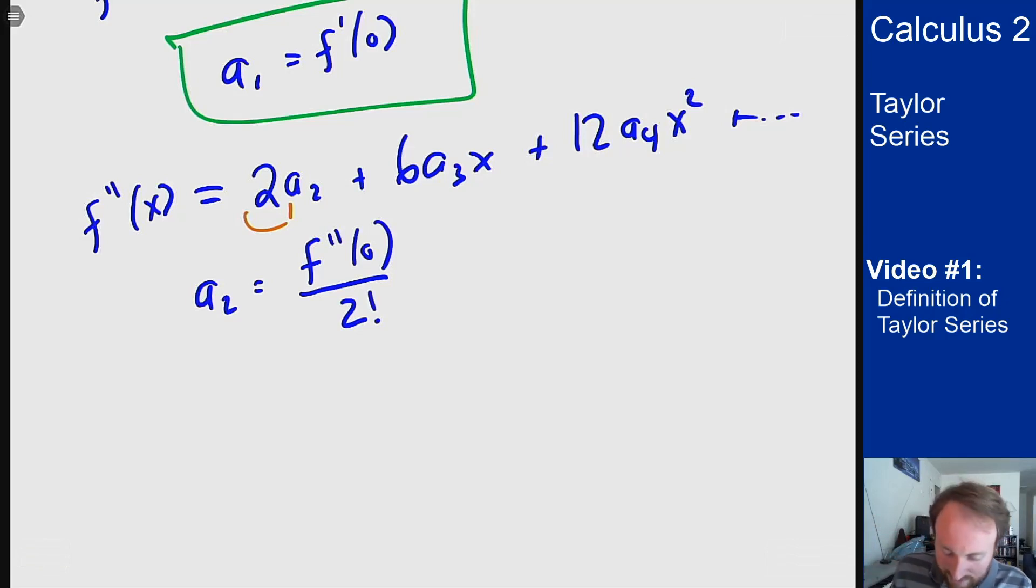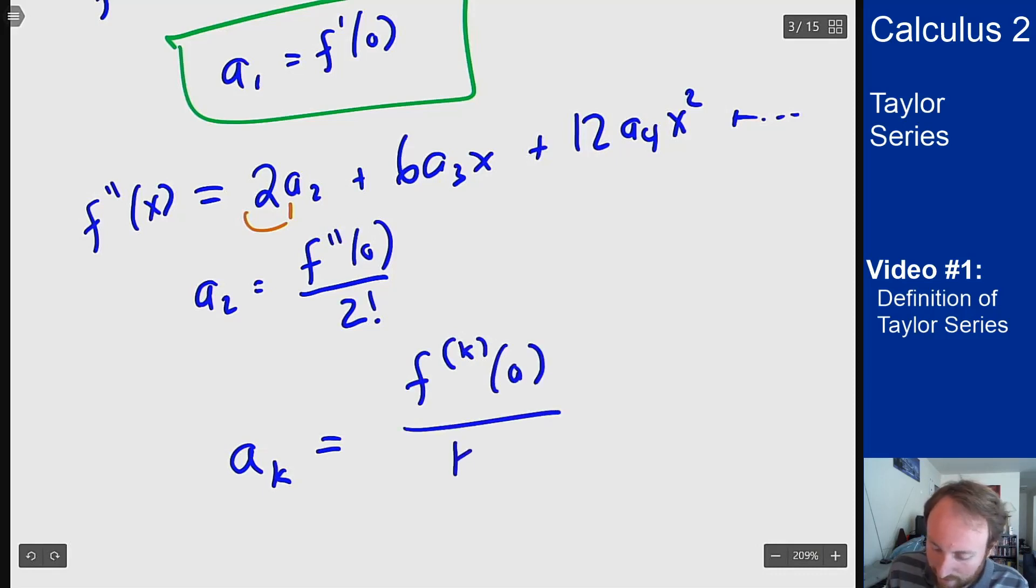If I continue with this process I will see that I get that a_k, the kth term in the series, should be the kth derivative at zero divided by k factorial. All right if I go one more step I will get that a_3 should be f triple prime at zero over 6 because this 6 here will be the factor to divide by and 6 is 3 factorial.